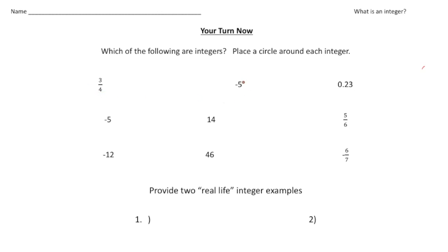Negative five, well, that's a whole number. So that's our first integer. 0.23 or 23 hundredths, well, that's a fraction. So that's not an integer.